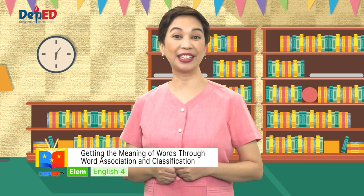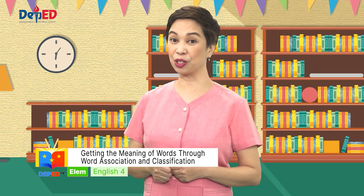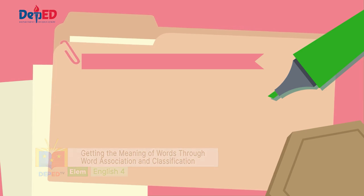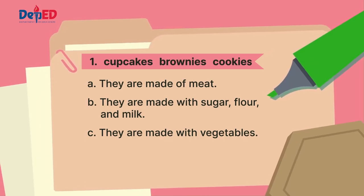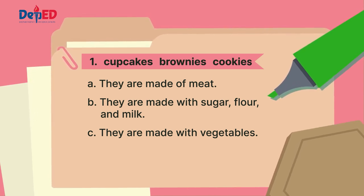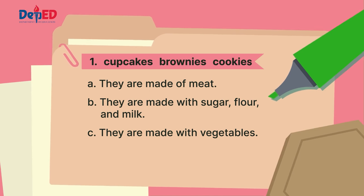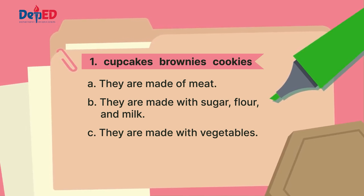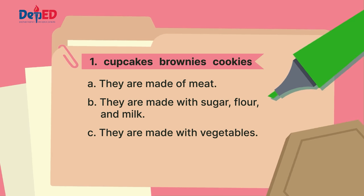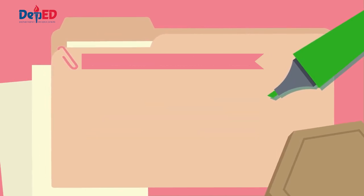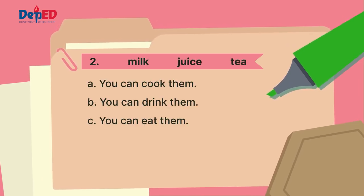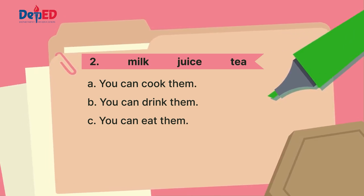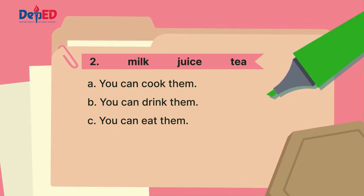Here is another activity for word classification. You have to find the best way to classify the words in each box. Write the letter of the correct answer on a sheet of paper. Number one: cupcakes, brownies, cookies. Letter A: they are made of meat. Letter B: they are made with sugar, flour, and milk. Letter C: they are made with vegetables. Number two: milk, juice, tea. Letter A: you can cook them. Letter B: you can drink them. Letter C: you can eat them.